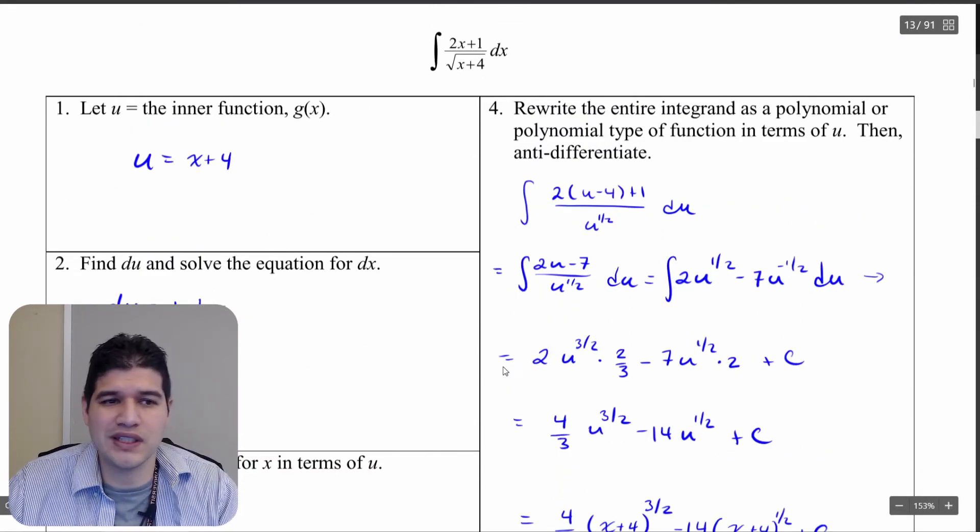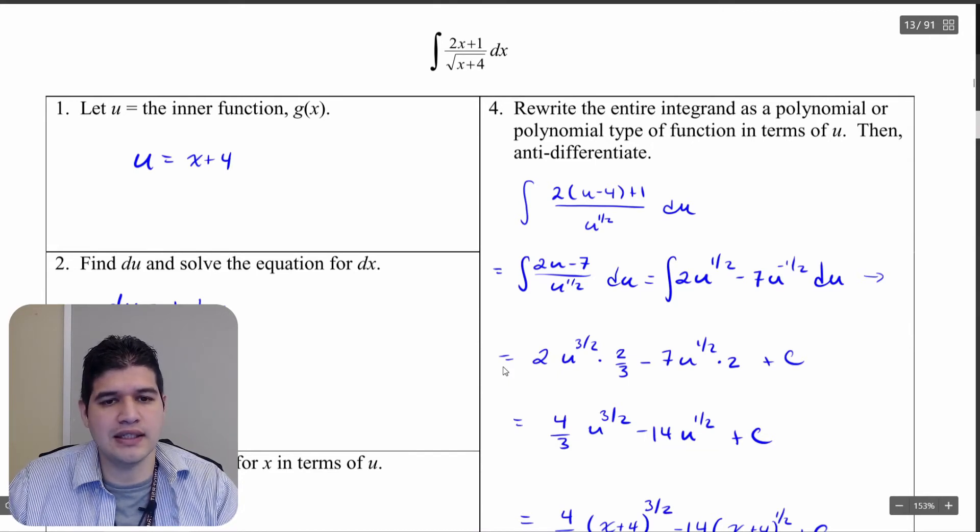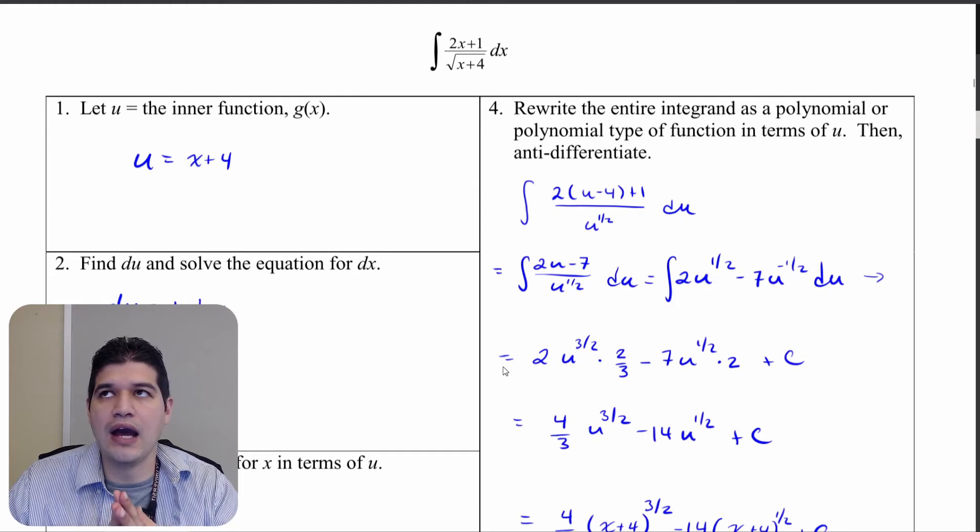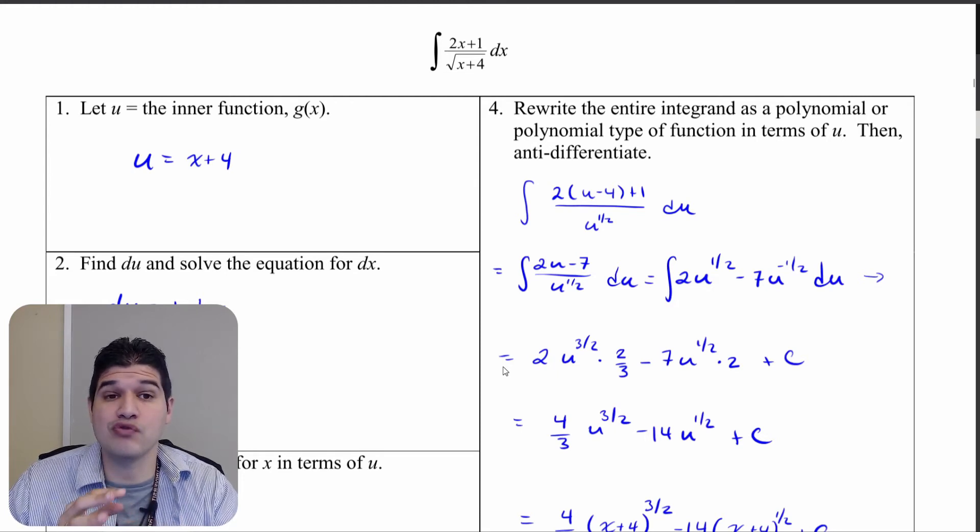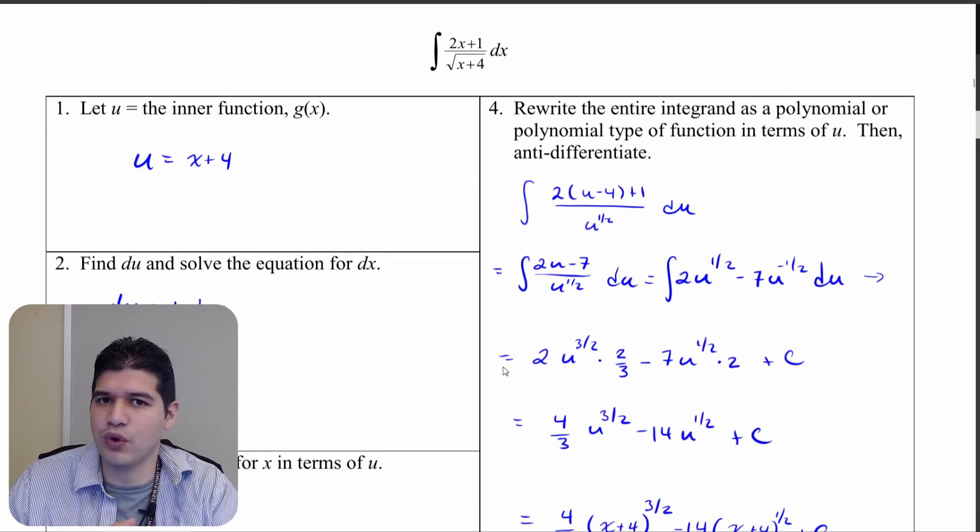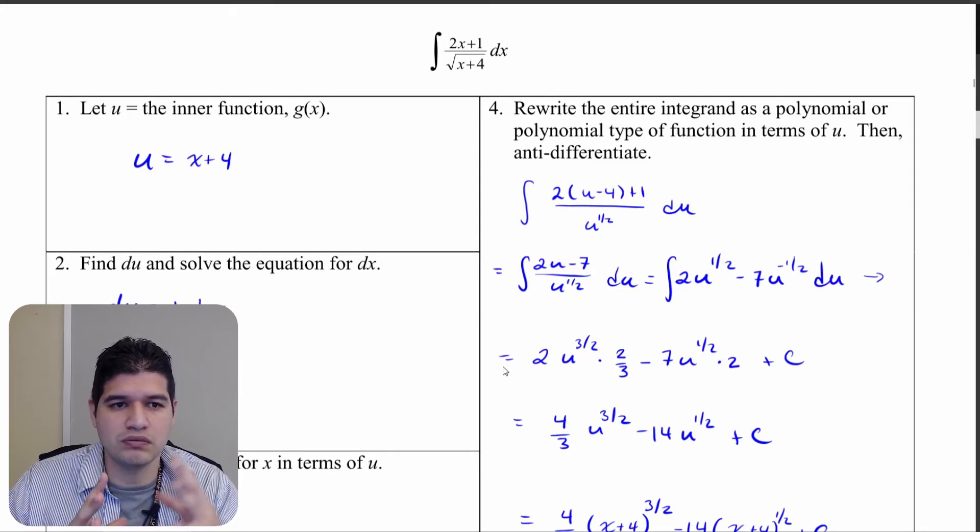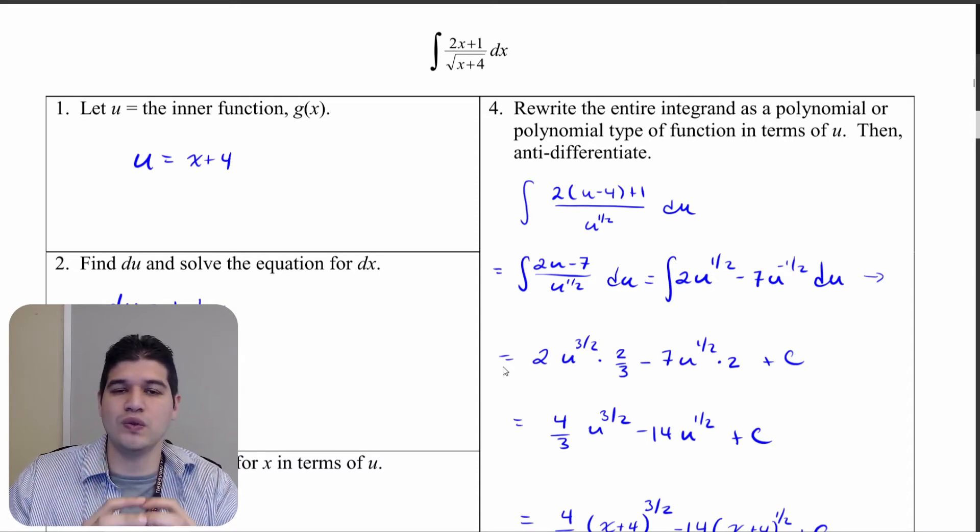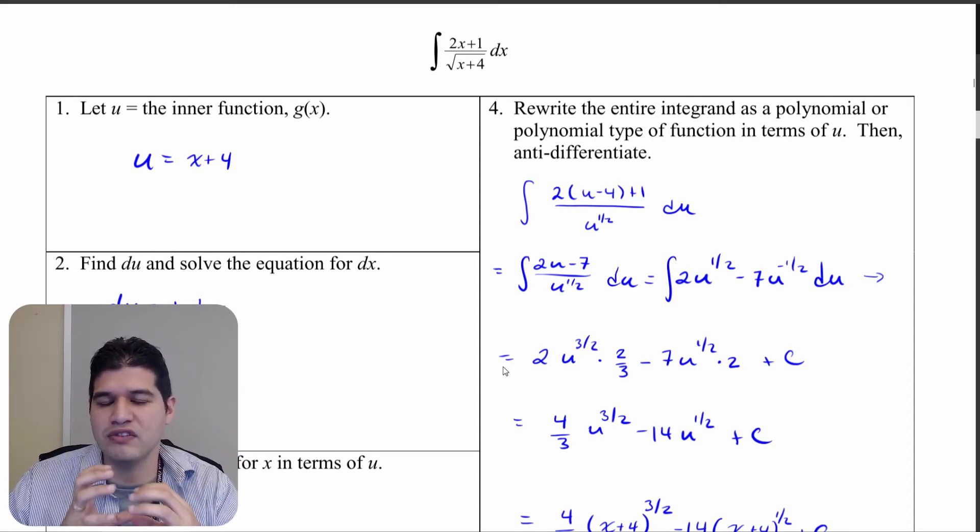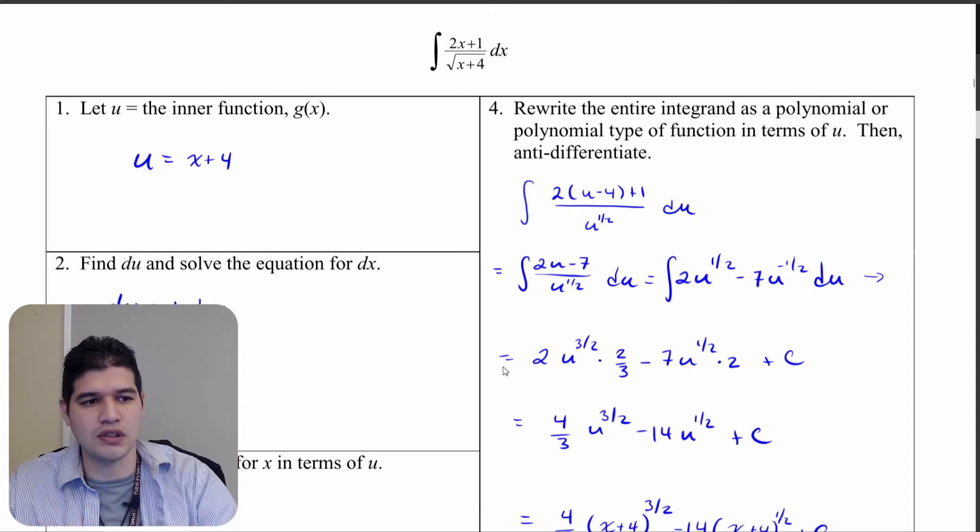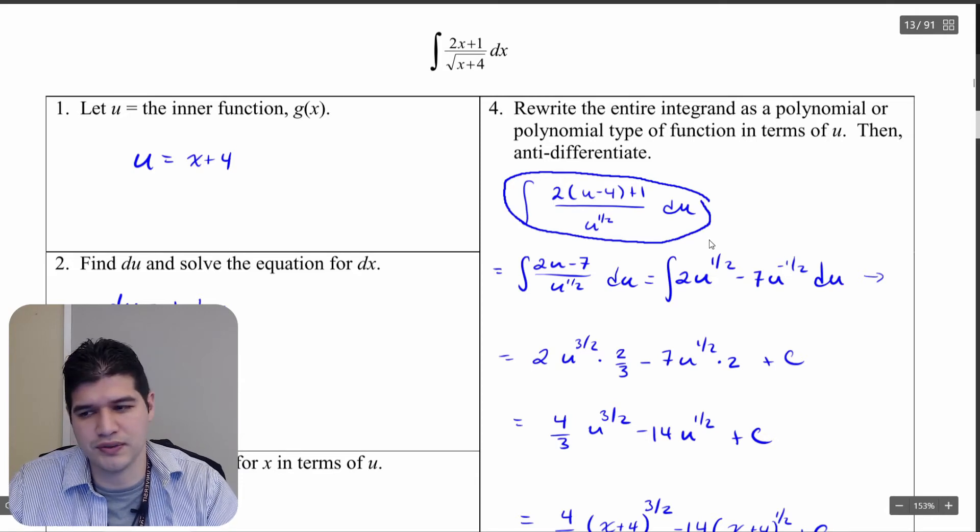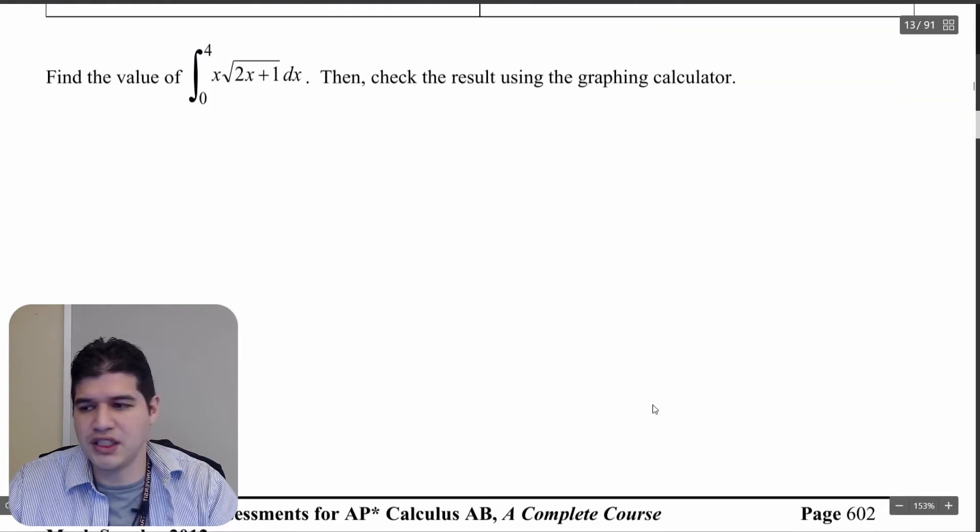The way these problems normally come up on the AP exam is these are going to be multiple choice. And what you really need to know is how these integrals can be rewritten using equivalent forms where we can let u equal the inner function. And then it says, the question might say something like, if u equals this, what is an equivalent form of this integral? So then in the end, you're really just looking for this answer in terms of a multiple choice. So there's one more question here.